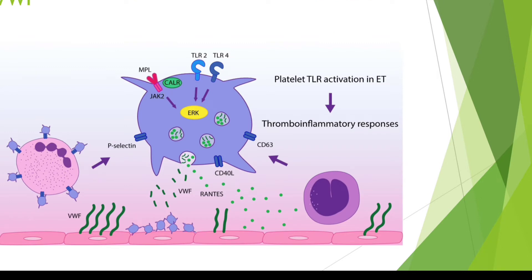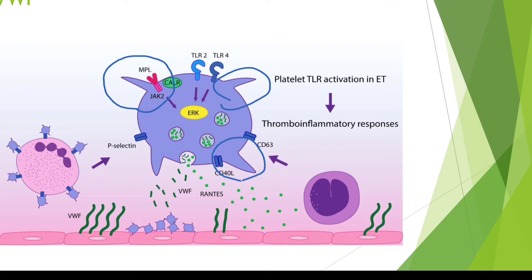In platelet plug formation, the platelet is activated, leading to the appearance of spikes over the surface, which enhances adhesion and aggregation. The activated platelet also releases certain contents. One of the most important is von Willebrand factor, which is a very important factor for platelet adhesion.